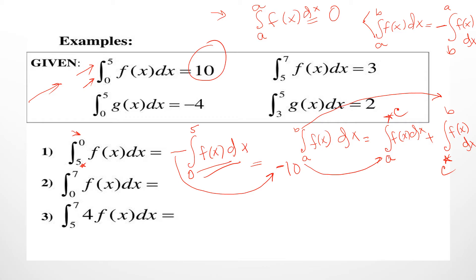Now question number 2: from 0 to 7, f(x) dx. First check — do you have 0 and 7 together? No, you have 0 and 5. Focus only on f(x) and ignore any data about g(x). You have one piece of data from 0 to 5 and another from 5 to 7.